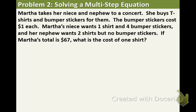Example 2. Martha takes her niece and nephew to a concert. She buys t-shirts and bumper stickers for them. The bumper stickers cost $1 each. Martha's niece wants 1 shirt and 4 bumper stickers, and her nephew wants 2 shirts but no bumper stickers. Martha's total is $67. What is the cost of 1 shirt? The question is always going to point you to the variable involved. How about we define S equals cost of 1 shirt.